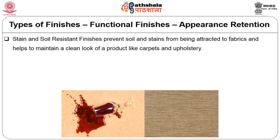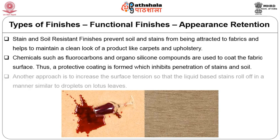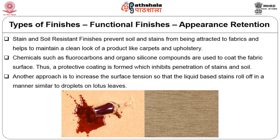Appearance retention finishes — the first is stain and soil resistant finishes. These prevent soil and stains from being attracted to fabrics and help maintain a clean look of products like carpets and upholstery. Chemicals such as fluorocarbons and organosilicon compounds coat the fabric surface, forming a protective coating which inhibits penetration of stains and soil. Another approach is to increase the surface tension so that liquid-based stains roll off, similar to droplets on lotus leaves.